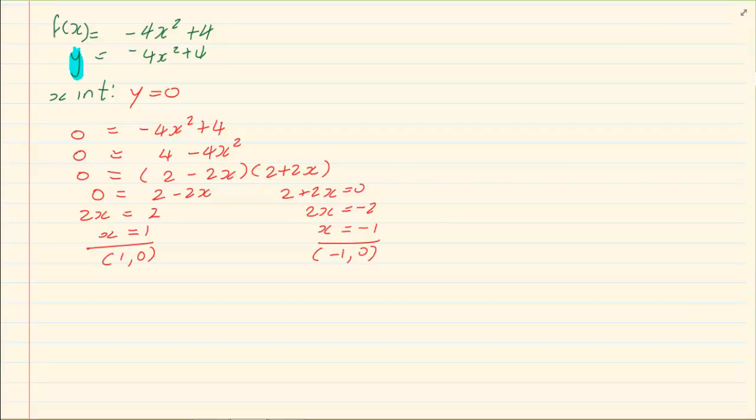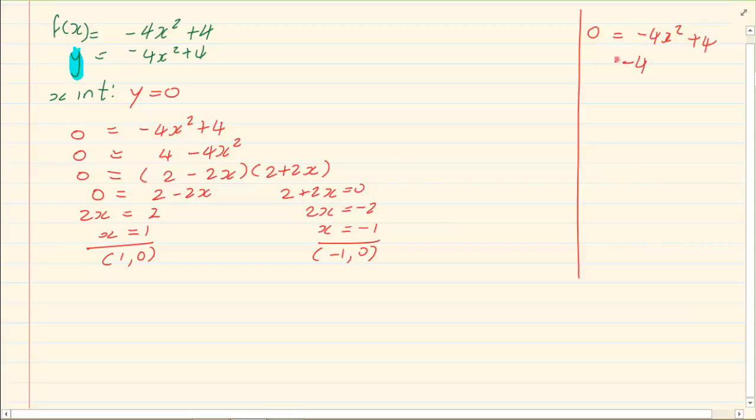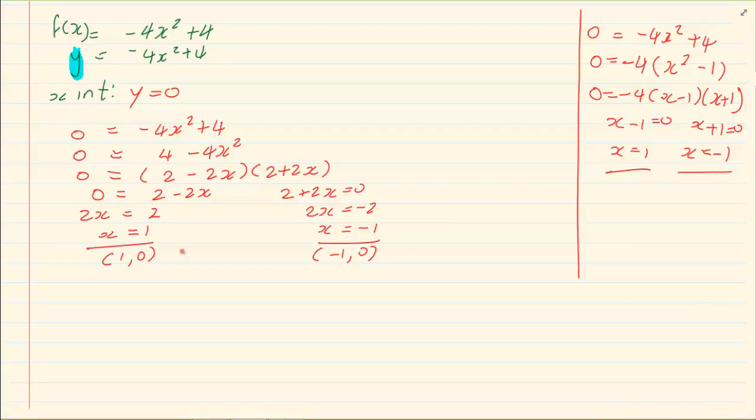Now just for interest sake, if you had done the following: 0 equals minus 4x squared plus 4, and you took out a common negative 4 - why negative? Because that troubles you - so you end up with x squared minus 1. You'd have minus 4, x minus 1, x plus 1. And if you're solving you have x minus 1 equals 0, x plus 1 equals 0, x equals 1, x equals minus 1. Look at the answers - they're exactly the same. So it doesn't matter which method you choose. Any of your factorizing and solve for x methods would work in this equation, so whichever way you're comfortable with, you go with that.